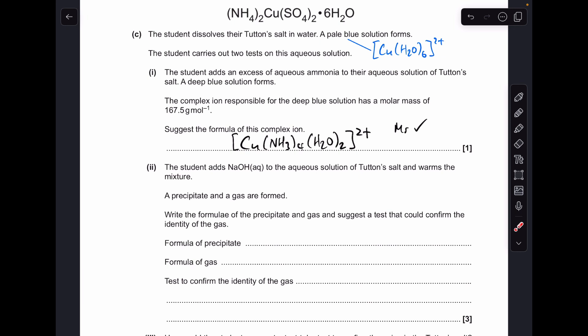Moving on to the next part. The students added aqueous sodium hydroxide to the aqueous tutton salt. What's the precipitate? Well that's going to be copper 2 hydroxide. You can give either of those formula there. We don't need square brackets for the second one because it's not an ion. And the gas is going to be ammonia because you've got aqueous ammonium ions heated with aqueous hydroxide ions.